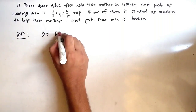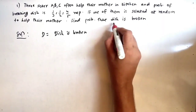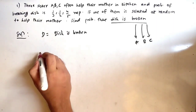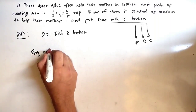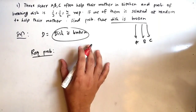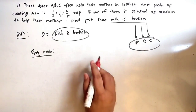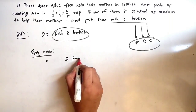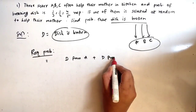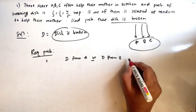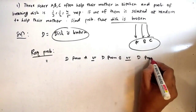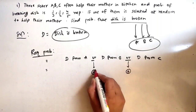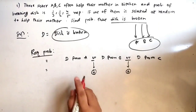Let D represent the event that the dish is broken. This can happen through any of the three sisters A, B, or C. So the required probability is: dish is broken from A, or from B, or from C. We write it in English first, then convert to mathematical terms. The word 'or' will always be converted to a plus sign.